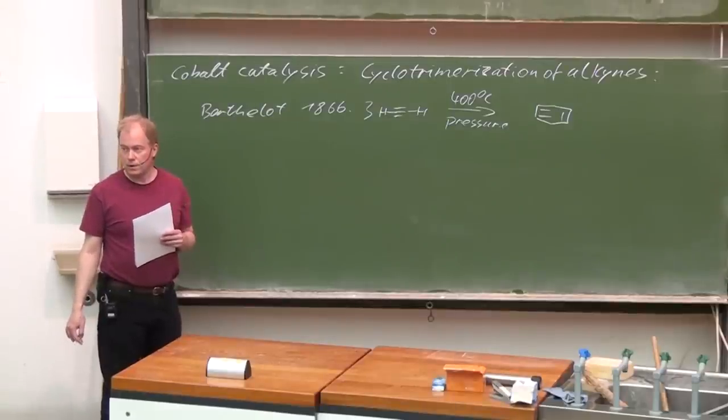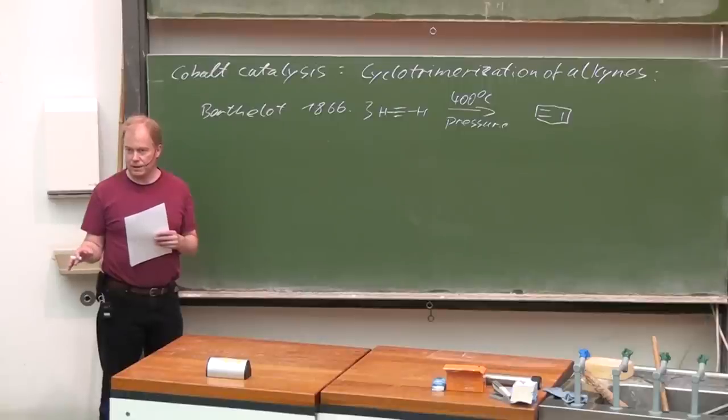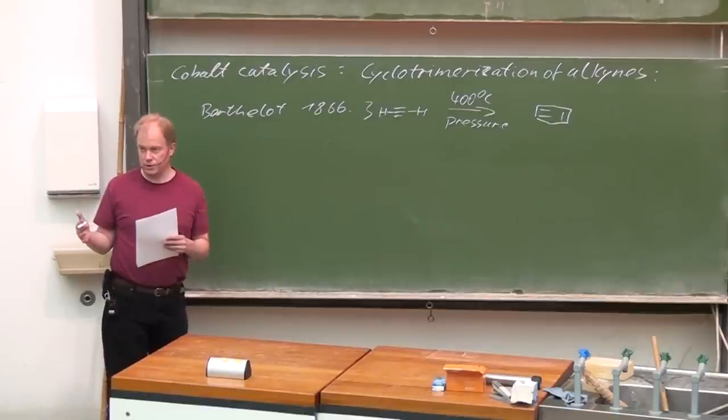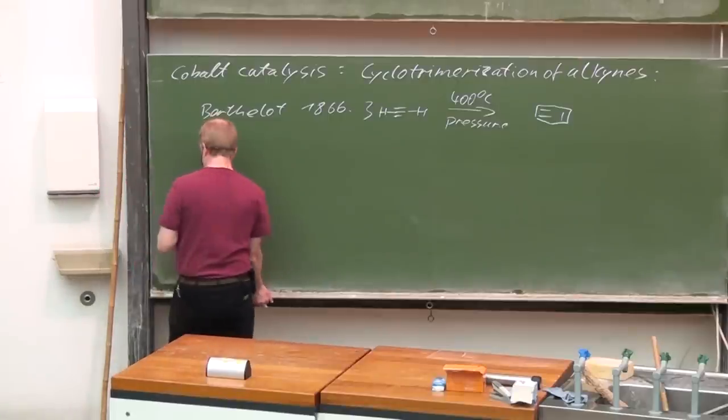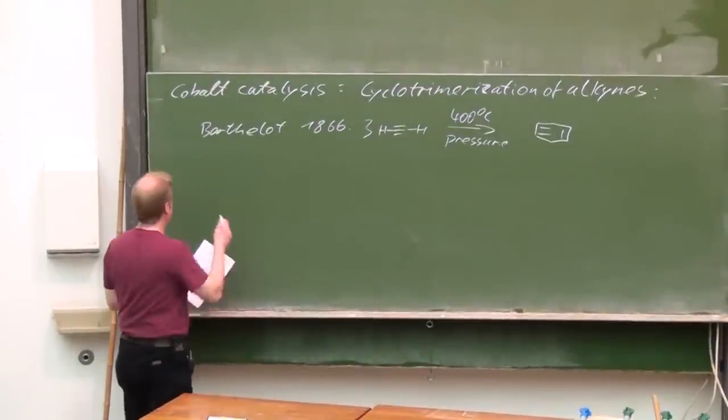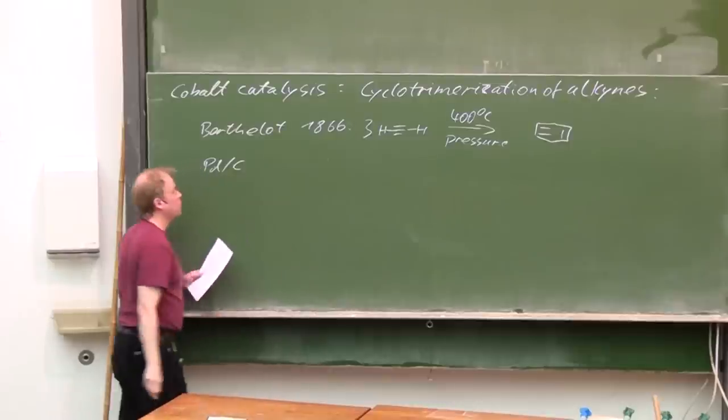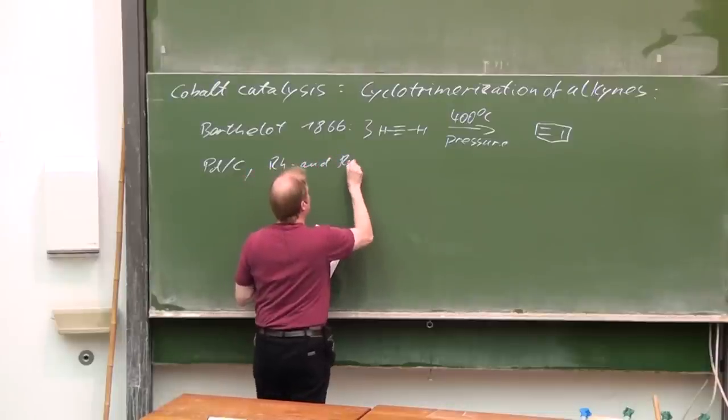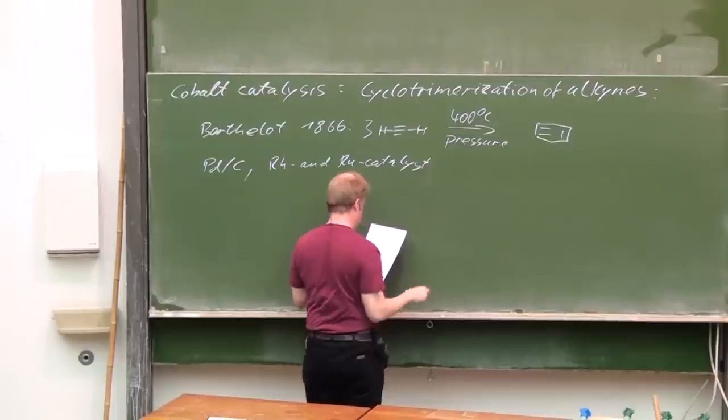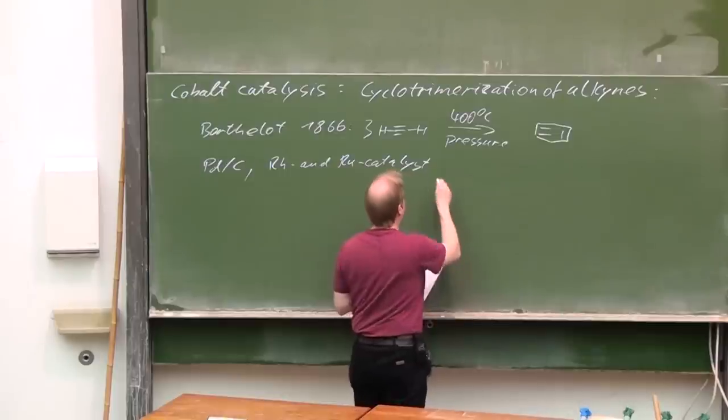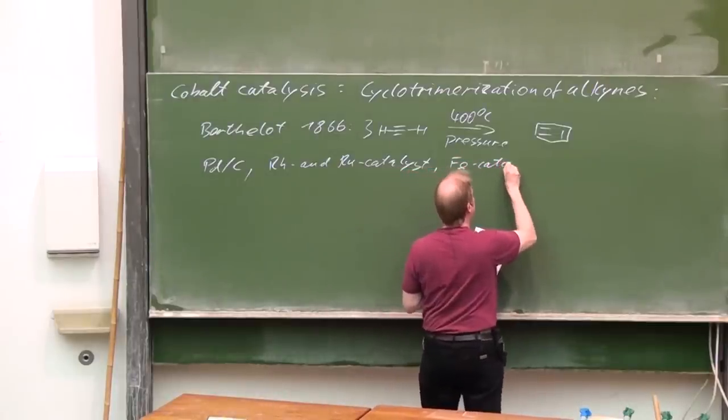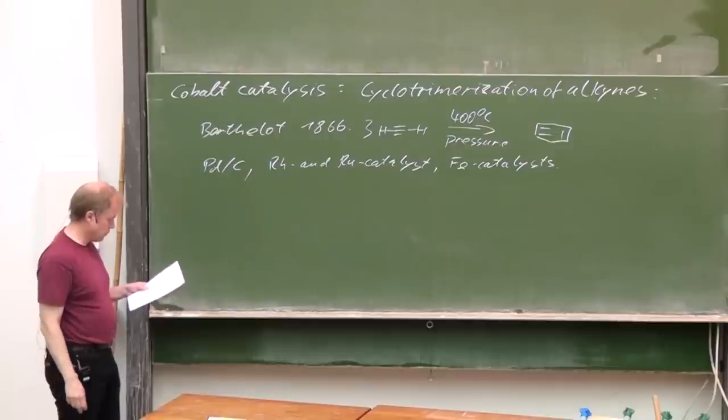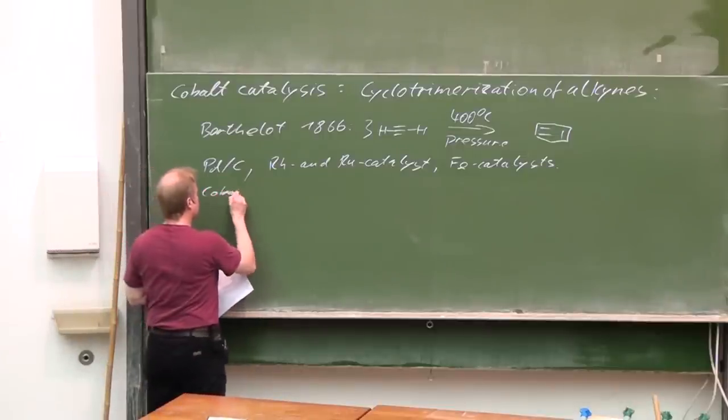Meanwhile, there are lots of catalysts that diminish the temperature necessary, even to room temperature. A lot of catalysts are known, for instance, palladium on charcoal, also rhodium and ruthenium catalysts, even some iron catalysts. But most renowned for these types of transformations are cobalt complexes.